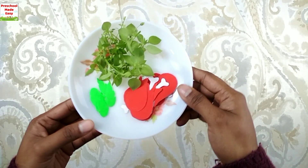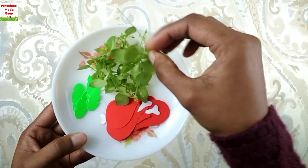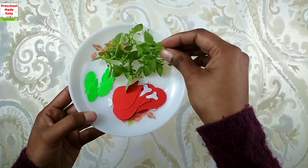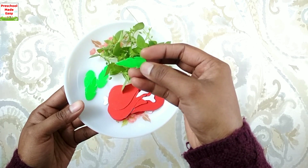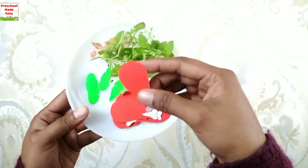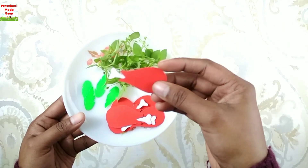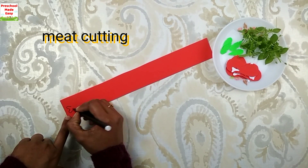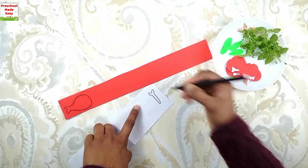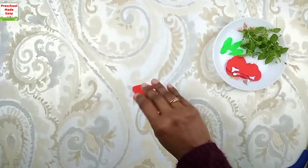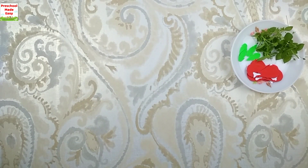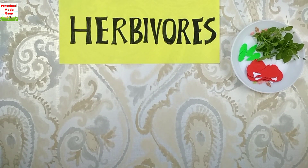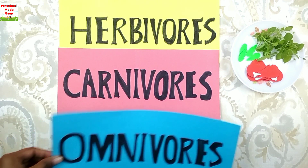Here in this plate I have some little plants, some leaves, and meat that I have cut from paper. In this plate I have made some real plants which are cut from leaves, and for flesh-eating animals I have made meat. Prepare all three category name cards: herbivores, carnivores, and omnivores.